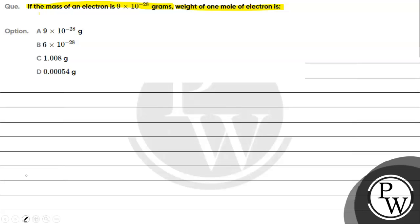Options are given to us. The key concept for this question is, we have 1 mole of electrons, which means 6.022 into 10 raised to the power 23 electrons.